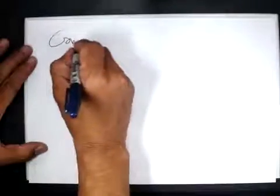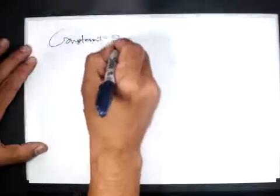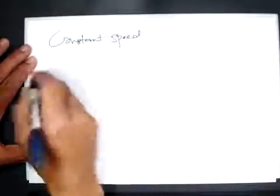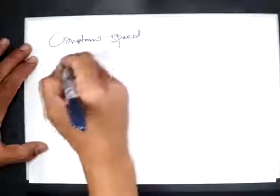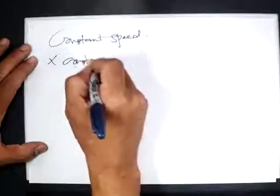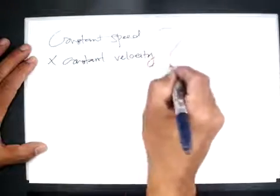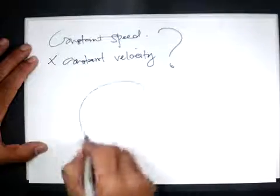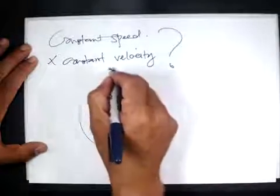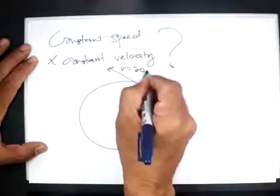The concept here, if you still remember, they use the word constant speed, but not constant velocity. What does it mean?